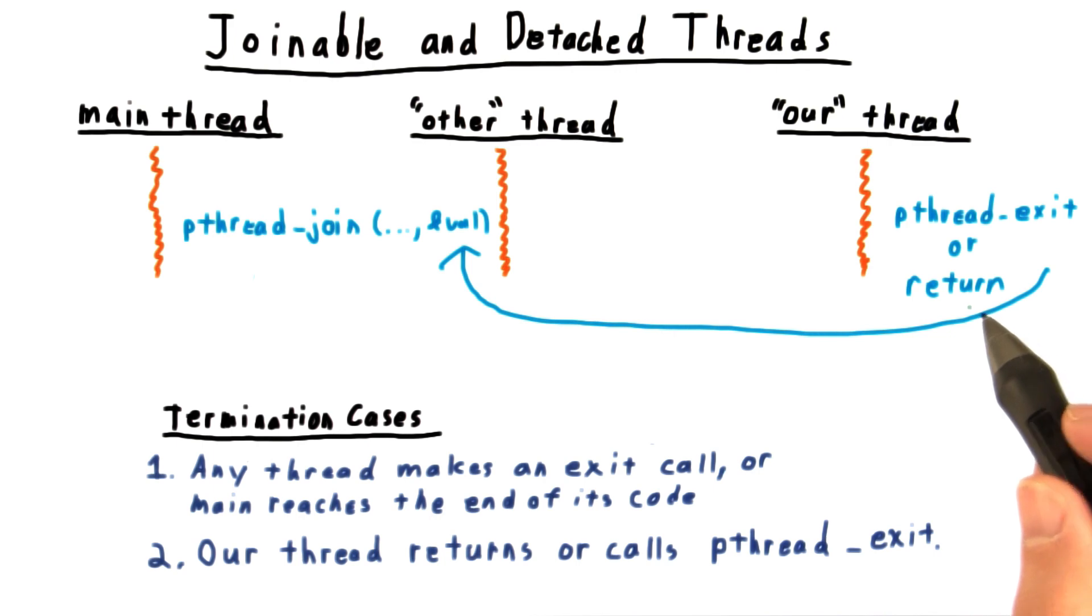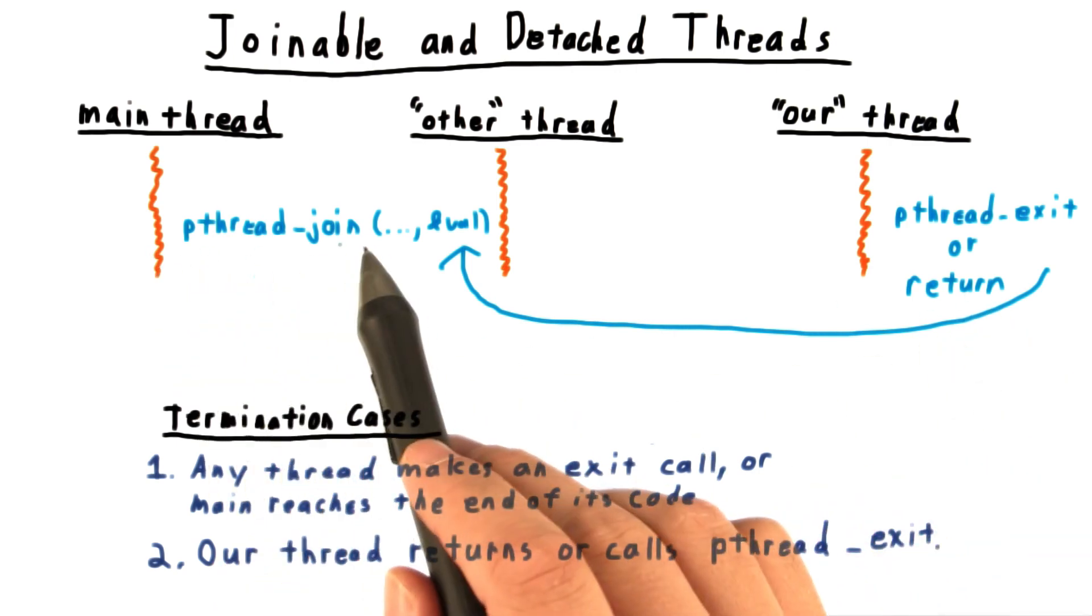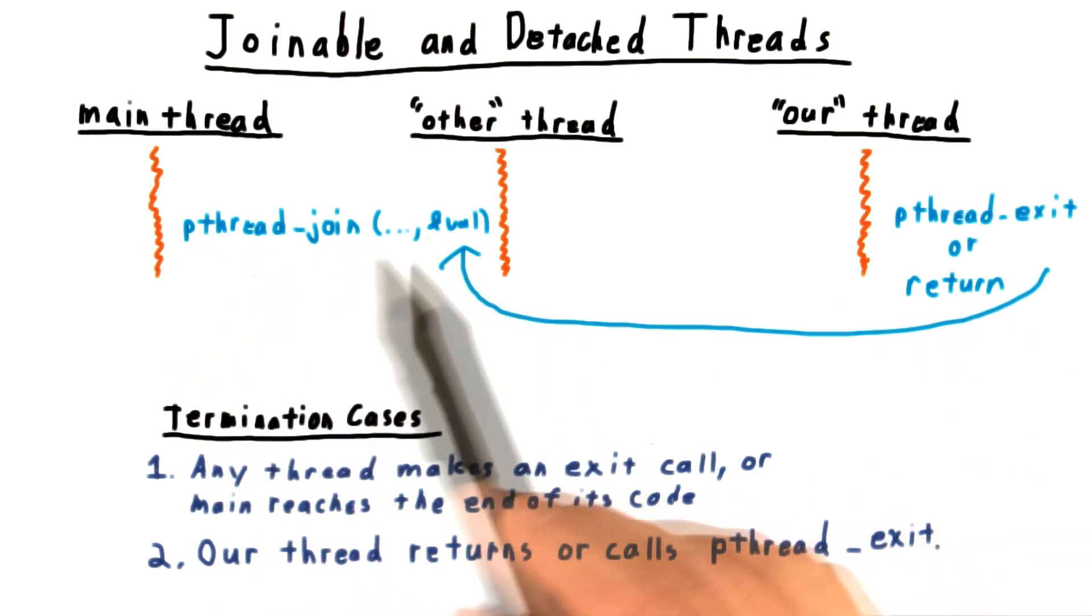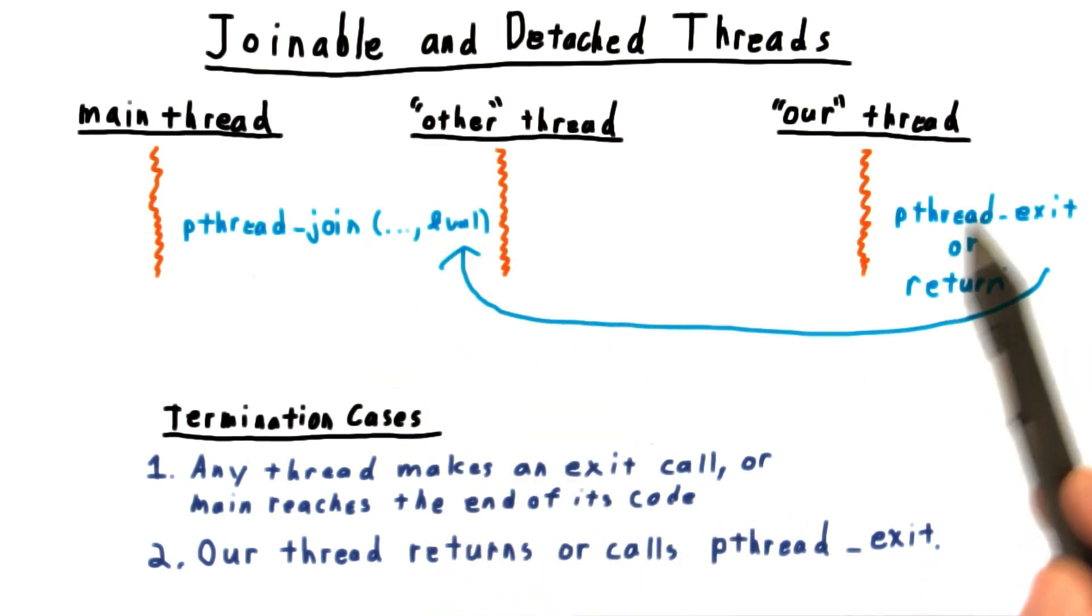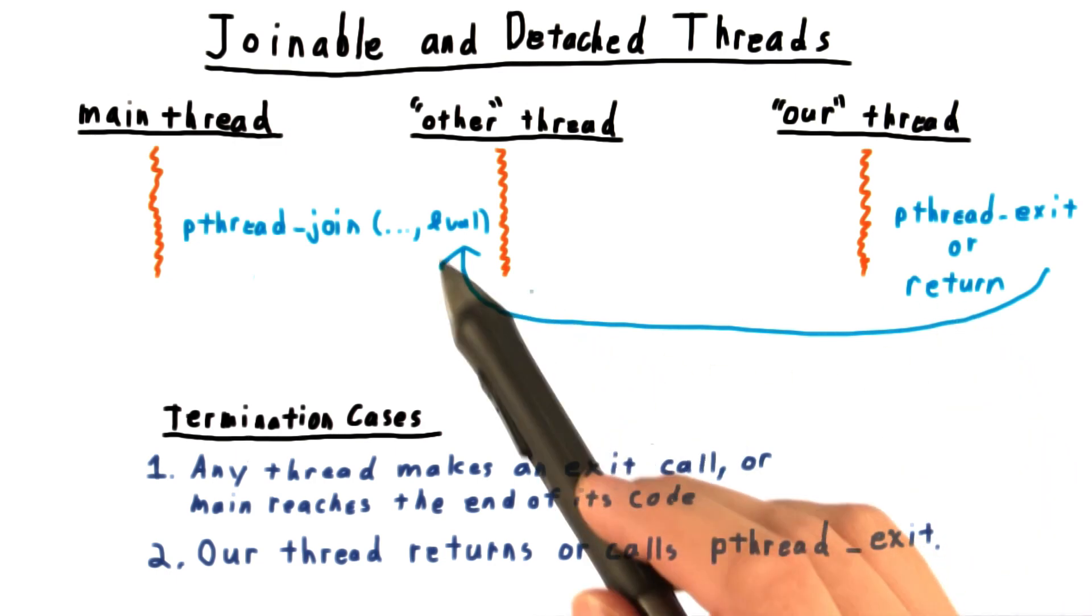This other thread makes a call to pthread_join, specifying the thread and also an address where the return value of the joinable thread will get stored.